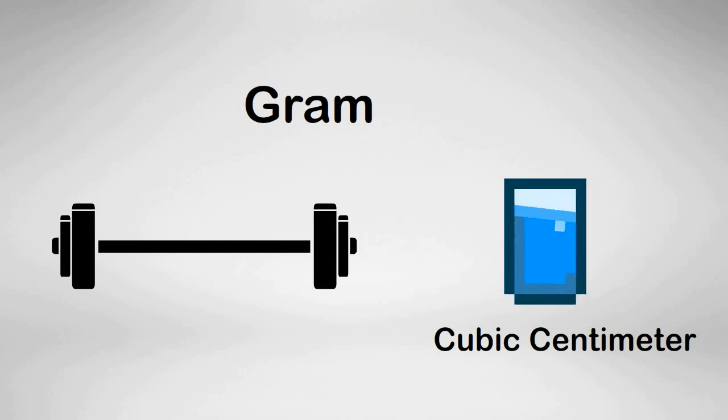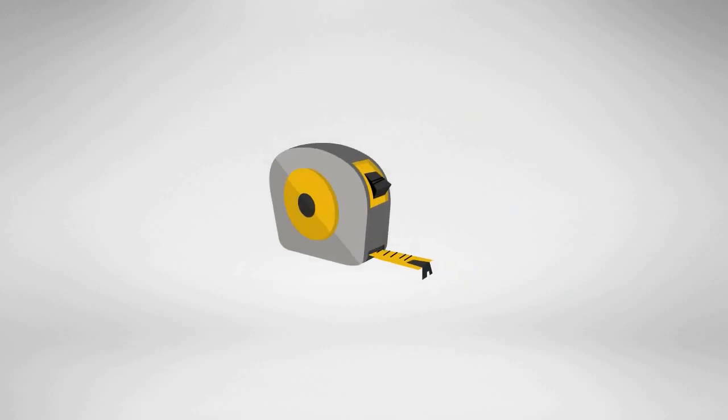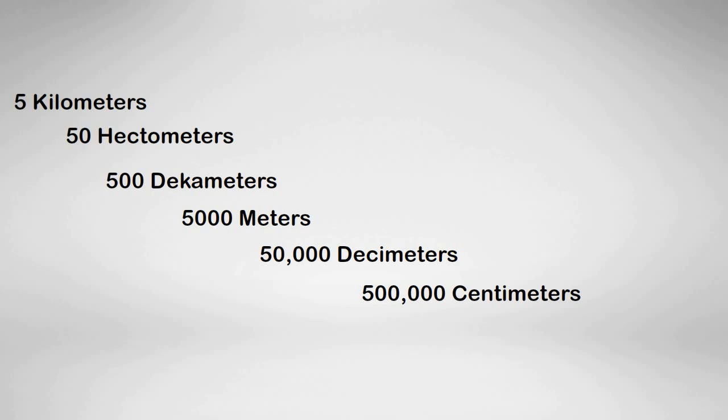Finally, let's look at one more example of how the metric system works. Say for instance you measured a distance of 5 kilometers. This would be equal to 50 hectometers, 500 dekameters, 5000 meters, 50,000 decimeters, 500,000 centimeters, and 5,000,000 millimeters.